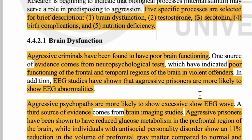Studies में पता चला कि जो aggressive criminals होते हैं — जो बहुत खूंखार, मारपीट करने वाले criminals होते हैं — उनके अंदर brain की functioning बहुत poor पाई गई। Evidence मिले हैं कि neurophysiological tests में जो frontal और temporal region होता है brain का, वो violent offenders में poor functioning करता हुआ दिखाई दिया। EEG यानी electroencephalograph — जिसमें brain waves को screen पर देखा जाता है — वो aggressive prisoners में abnormal आया।